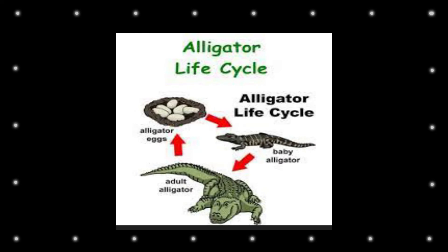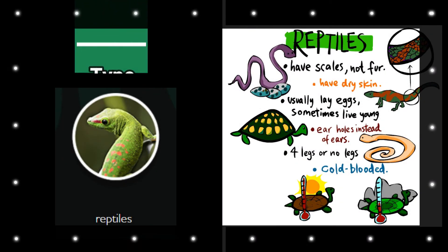The alligator life cycle goes: alligator eggs, baby alligator, and adult alligator — and it starts over again each year. Did you know what animal family the alligator belongs to? That's right — reptiles! Reptiles have scaly skin and not fur, have dry skin, usually have legs, ear holes instead of ears, and are cold-blooded.